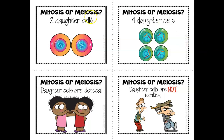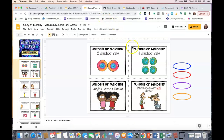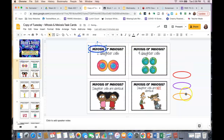The first card says: mitosis or meiosis creates two daughter cells. Think about which one starts with one cell and ends with two, versus one cell ending with four. Remember that the M-I-T in mitosis stands for 'makes it two.' So mitosis makes two daughter cells, whereas meiosis makes four. I'm going to grab one of these circles and mark mitosis here and meiosis here.